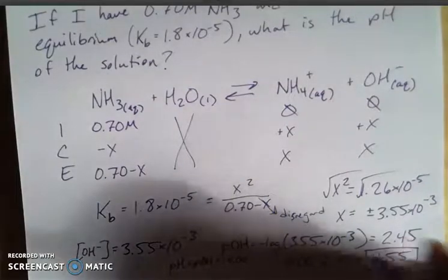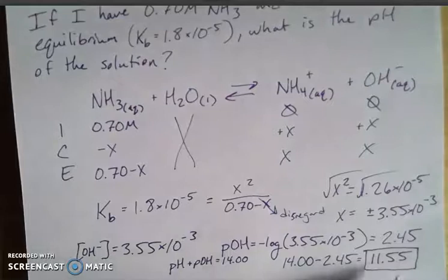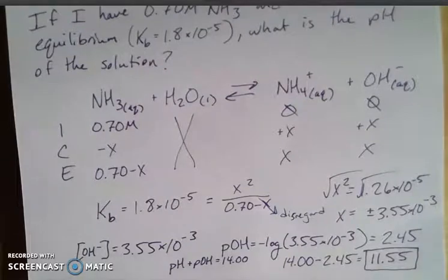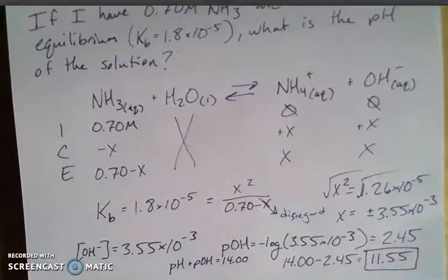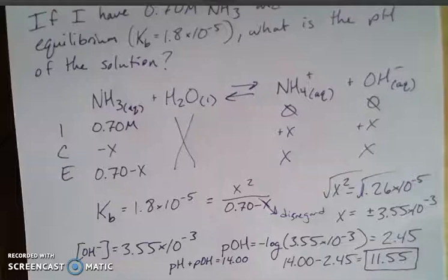So here's my final value. Again, with two sig figs, the two sig figs here reflected by the number of decimal places. And again, looking at 11.55, that tells me it's on the basic side of the scale, as the lower pOH told you as well. But maybe it's less familiar to think about things in terms of pOH as opposed to pH. OK, so that's a little bit about weak base equilibrium, and we'll kind of move on from there.